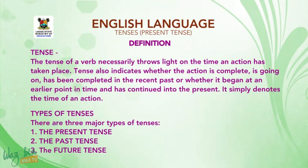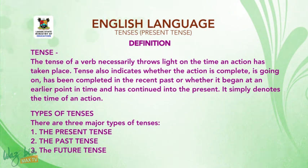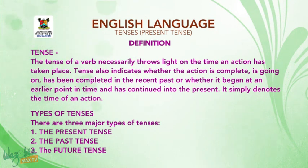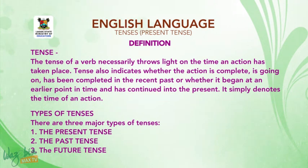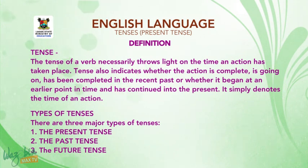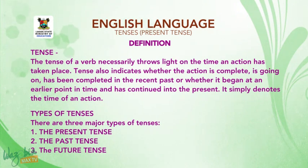Let us define tenses. The tense of a verb necessarily throws light on the time an action is taking place. Tenses also indicate whether the action is complete, is going on, has been completed in the recent past, or whether it began at an earlier point in time and has continued into the present. We can simply define a tense as a word or a verb which denotes the time of an action.